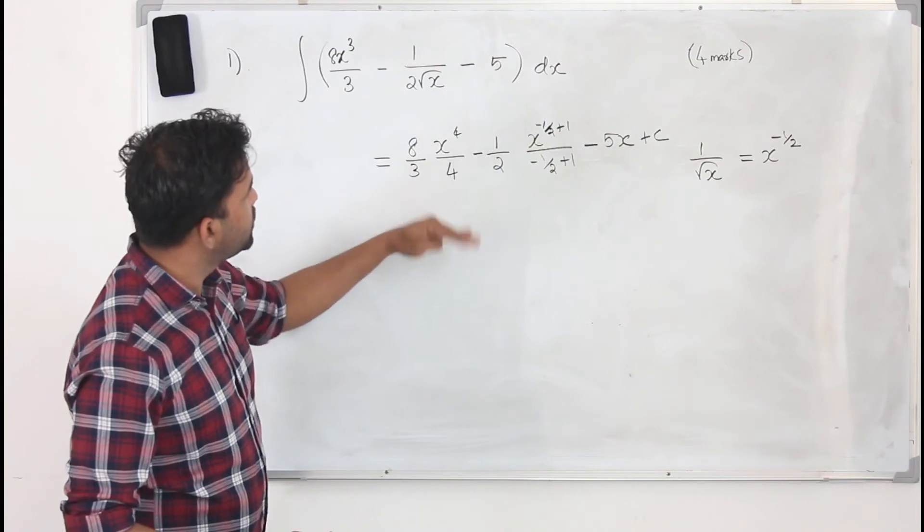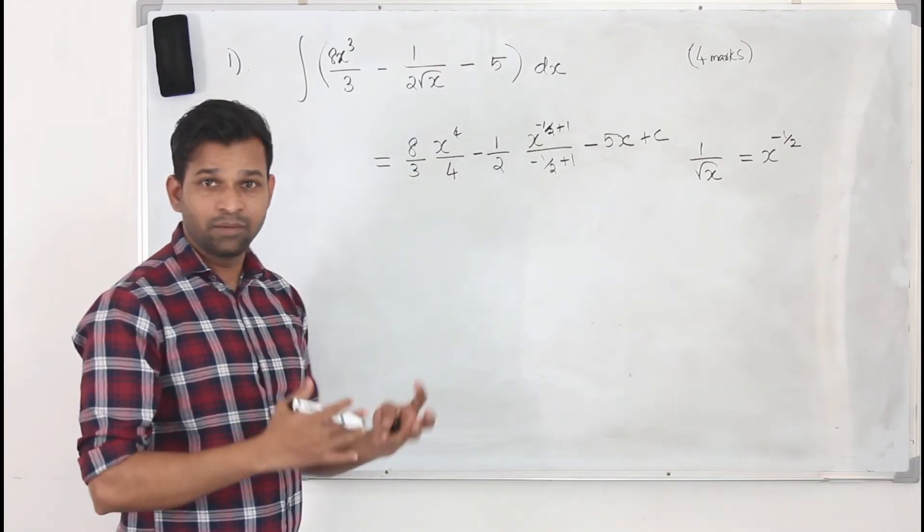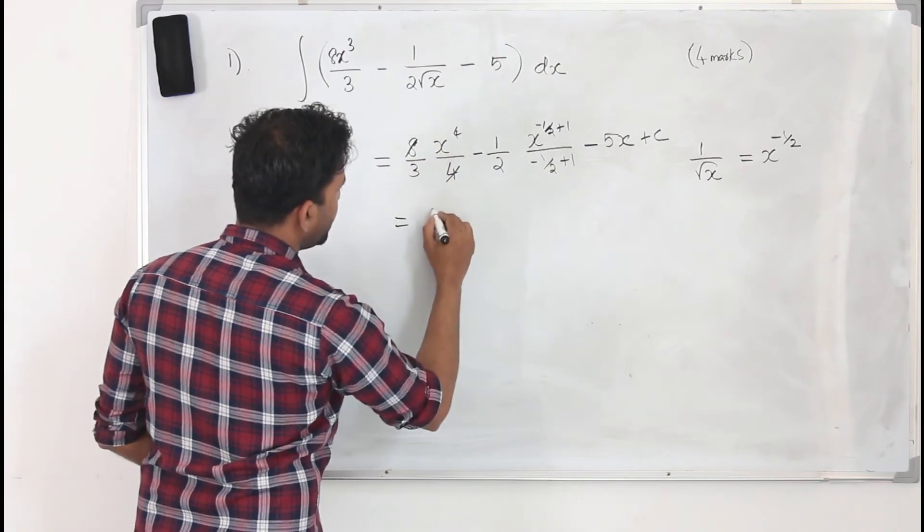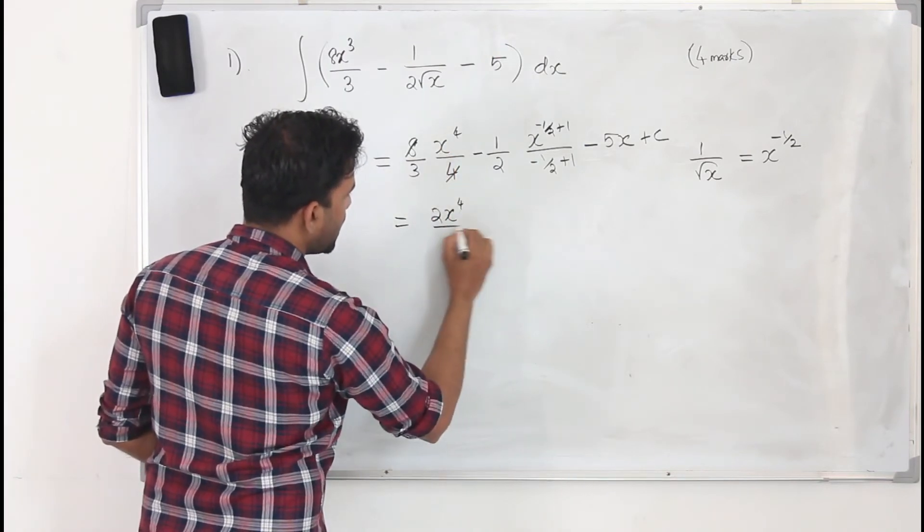But you need to simplify this. Always write the answer in the simplified form. So here you can cancel out. 2 upon 3, 2x to the power 4 upon 3.